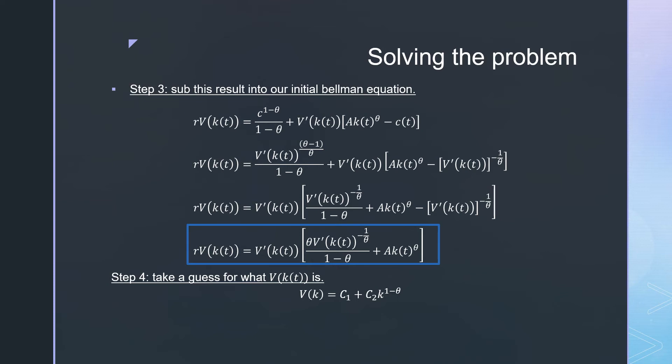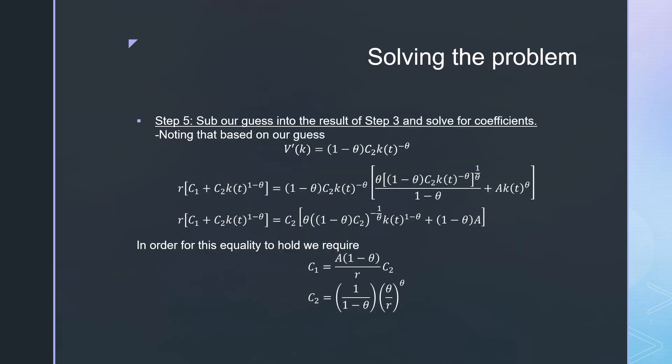Step four: take a guess for what V(k) is and work this math through. We sub this guess back into our coefficients. We first note based on our guess that our derivative of V(k,t) equals one minus theta times C2, which is our coefficient on k times k(t) raised to the power of negative theta.